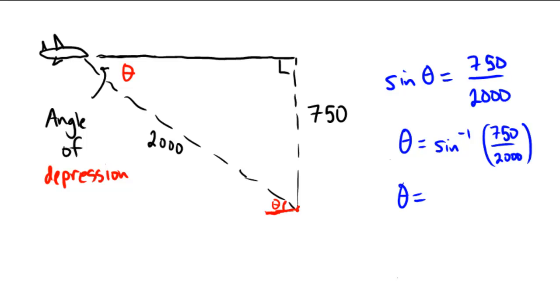And as I stick this into my calculator, I'm using the second option on the sine, 750 divided by 2000. And rounded to two decimal places, this is giving me an answer of 22.02 degrees. So the angle of depression is 22.02 degrees.